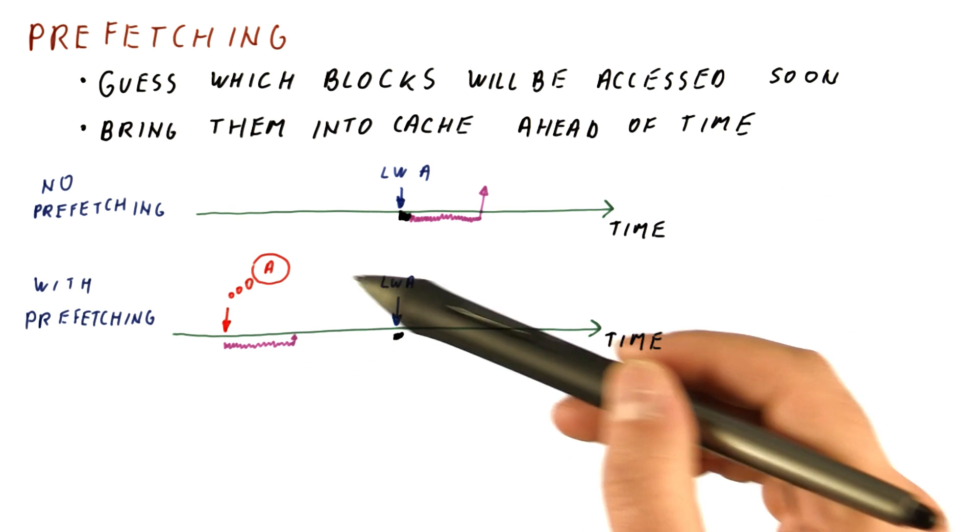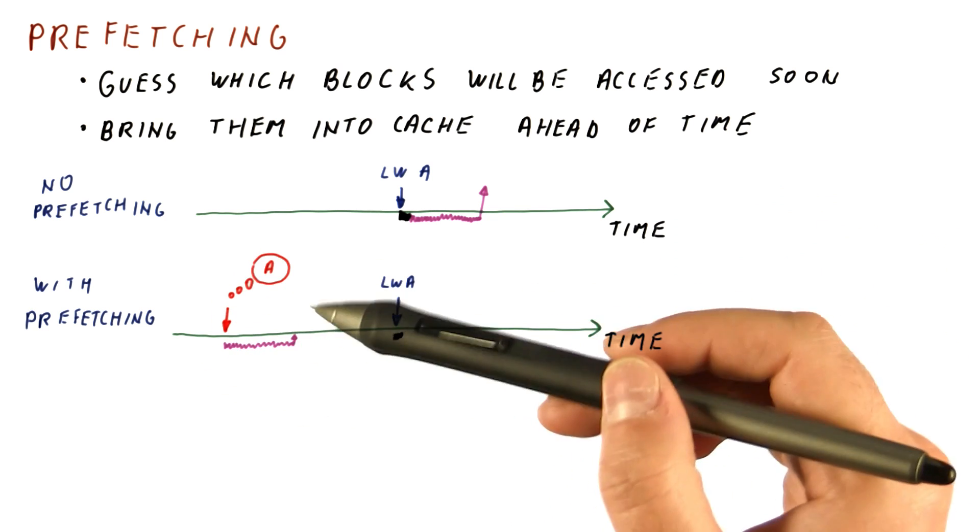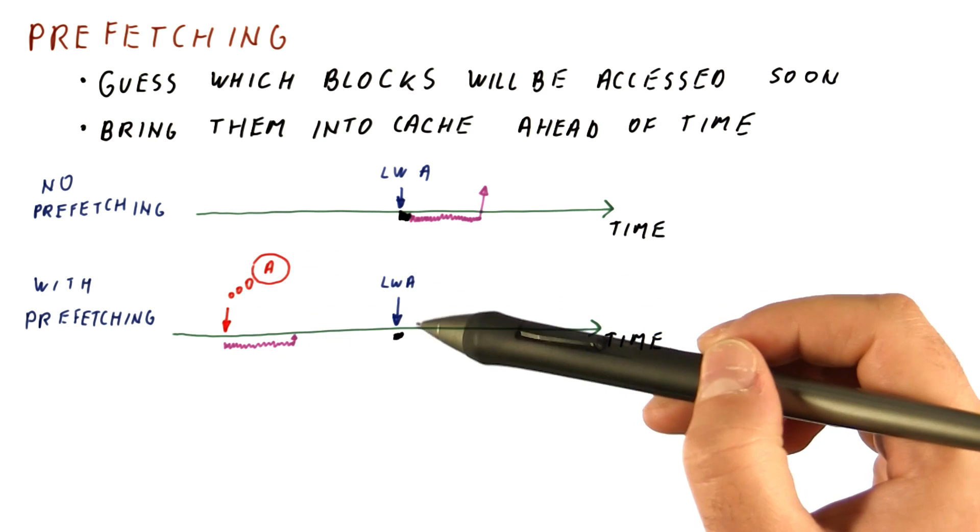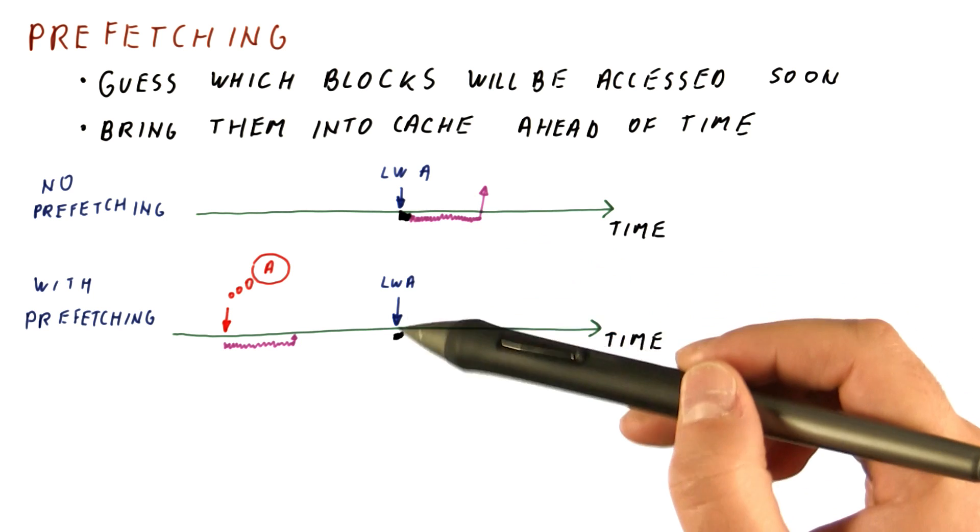So as you can see with prefetching, we're guessing what will be accessed and start fetching it from memory into the cache. If we guess correctly, instead of a miss, we get a hit.